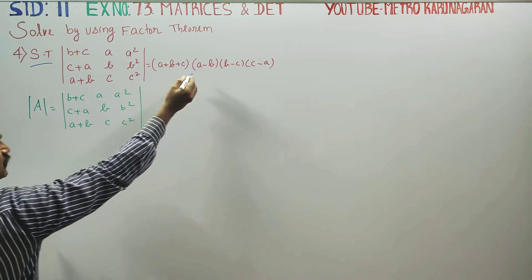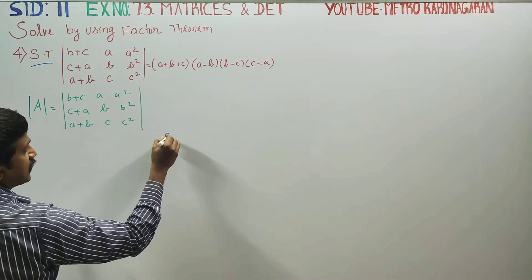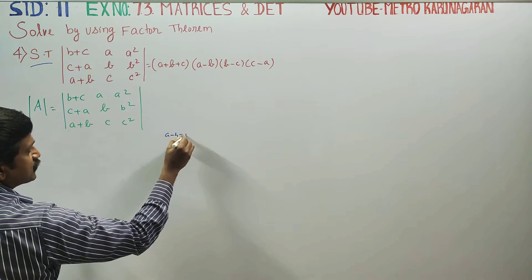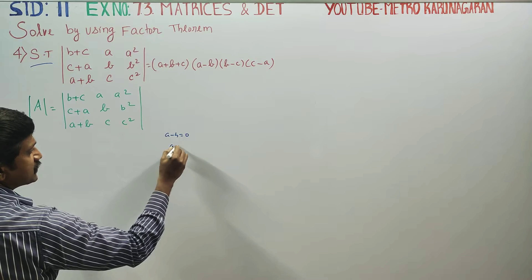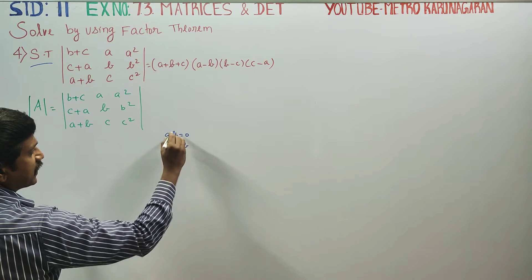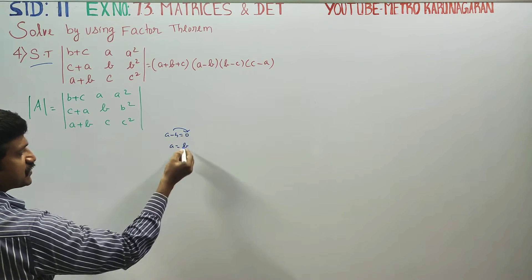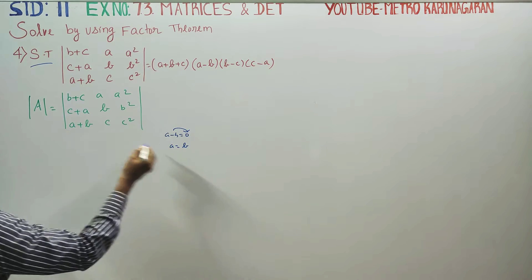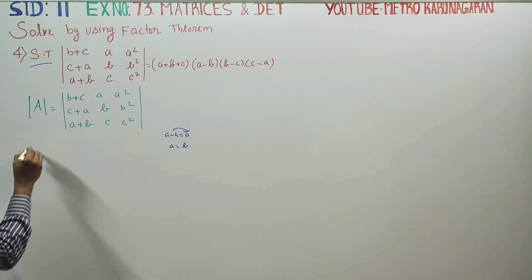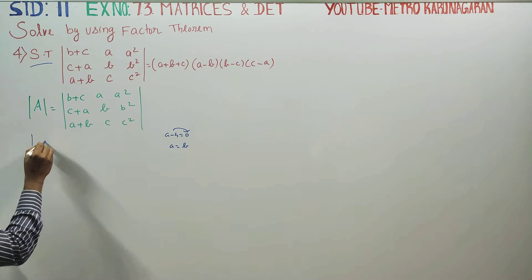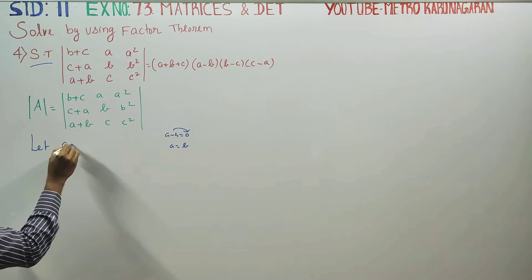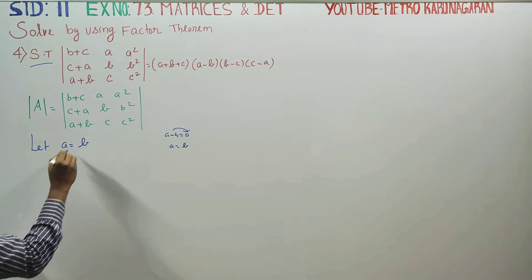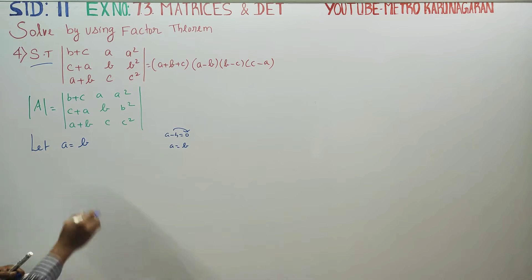Let us say a minus b is equal to zero, which means a is equal to b. This is where we start — let a equal b, and substitute.